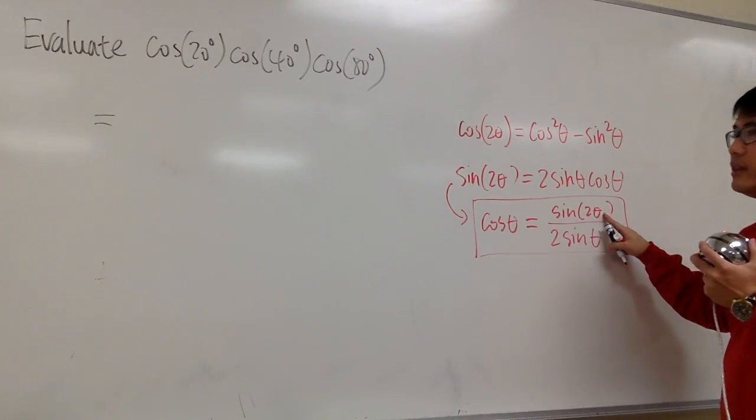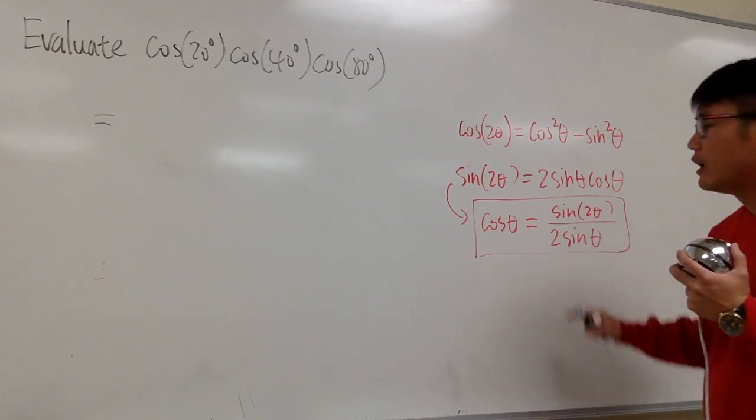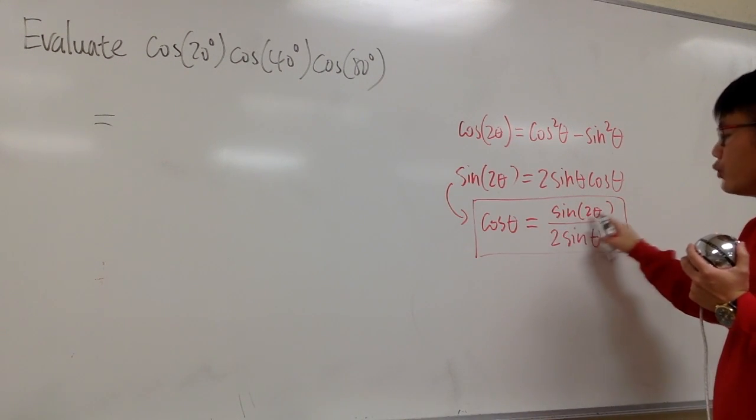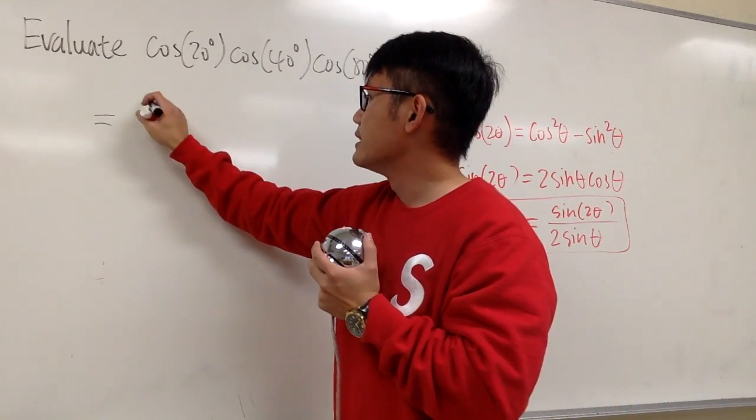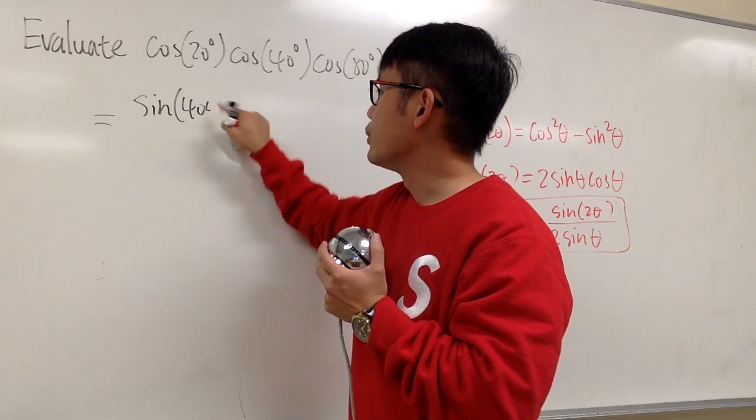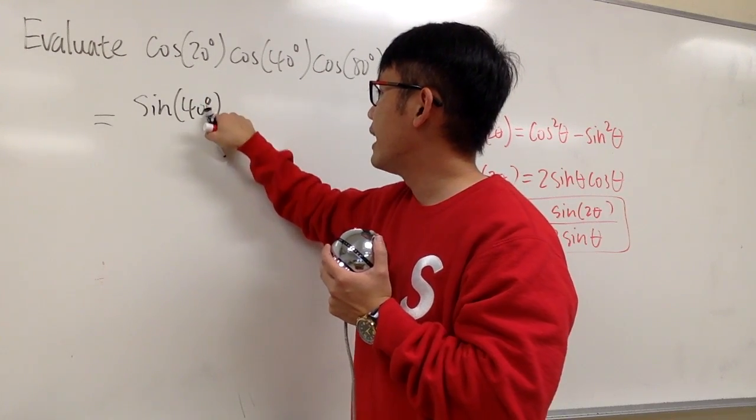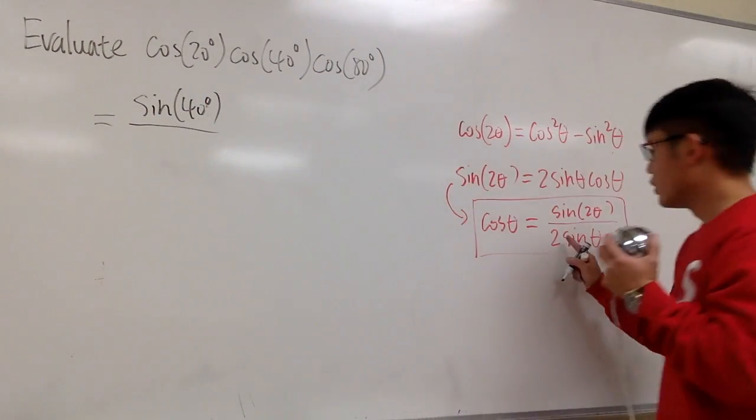So, I will plug in 20 degrees into the θ here. On the top, we will have sine of 2 times 20 degrees. That would be 40 degrees. So this is going to be sine of 40 degrees, right? And then we divide it by 2 sine.